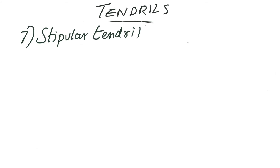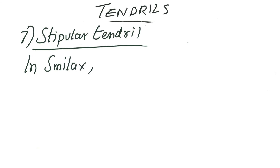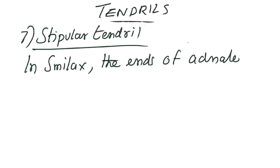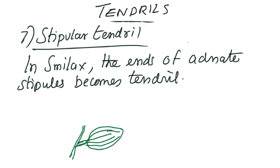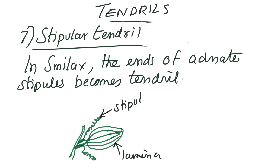The last case of tendril development is the stipular tendril. Stipules are lateral developments at the base of the leaf, meant for protecting the growing leaf tissue. A specific example is Smilax — in Smilax, the ends of the adnate stipules become tendrils. The stipule grows to a particular length along with the petiole, which is the characteristic feature of adnate stipules. So in Smilax, the stipules become tendrils.